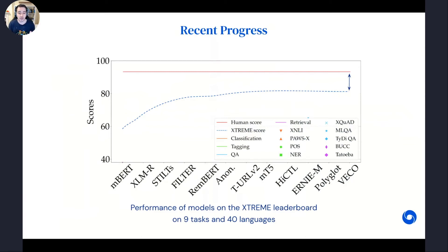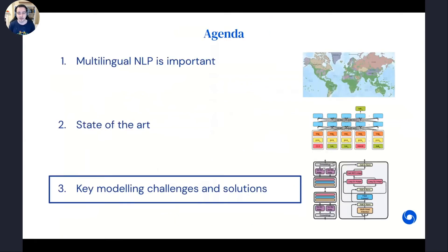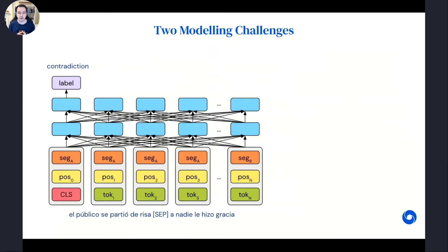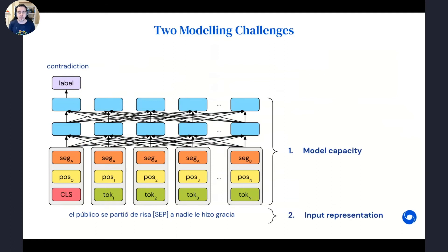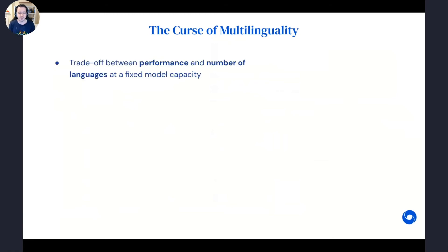To try to bridge this gap — which has already been achieved in monolingual transfer learning — I'm going to talk about a couple of challenges in this area. In particular, two modeling challenges relating to different parts of this pre-trained transformer architecture: the first relating to the overall capacity and number of parameters of the model, and the second relating to the way we represent the input — specifically how we view text as a sequence of subwords in different languages.